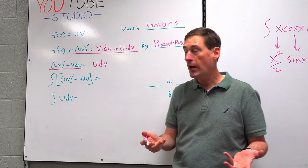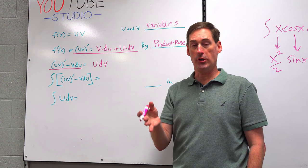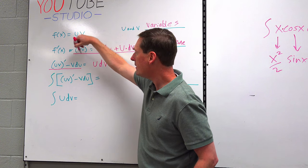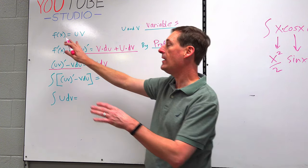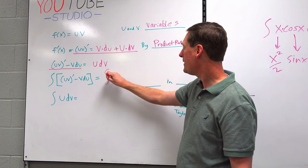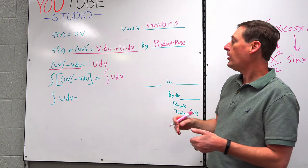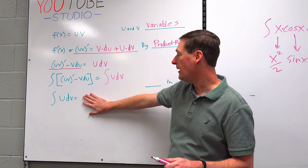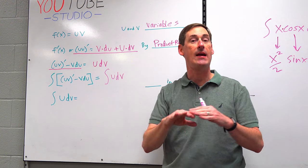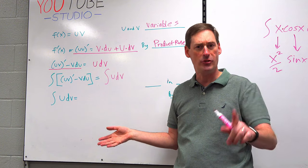We're still on the product rule — just twisting it in a different way. Now we're going to go backwards. What if you integrate all the stuff on the left-hand side? If you integrate the left side, you have to integrate the right side. So let me integrate u·dv. And finally, we get to a new formula that BC students love — they never forget it and find it very easy.